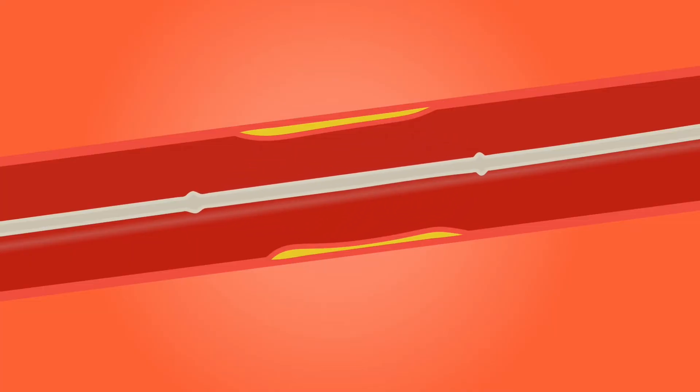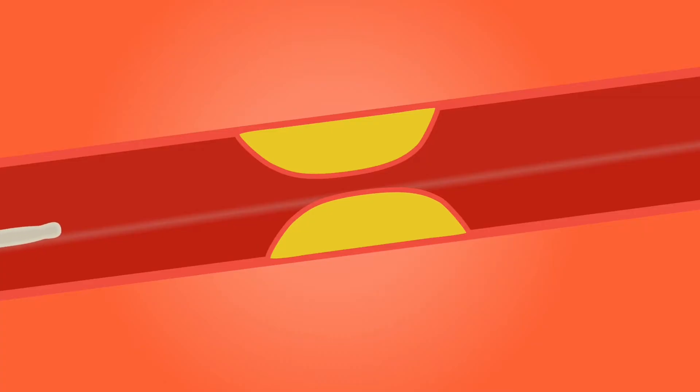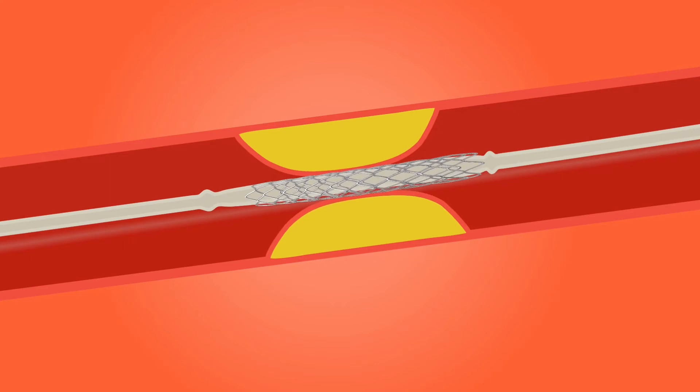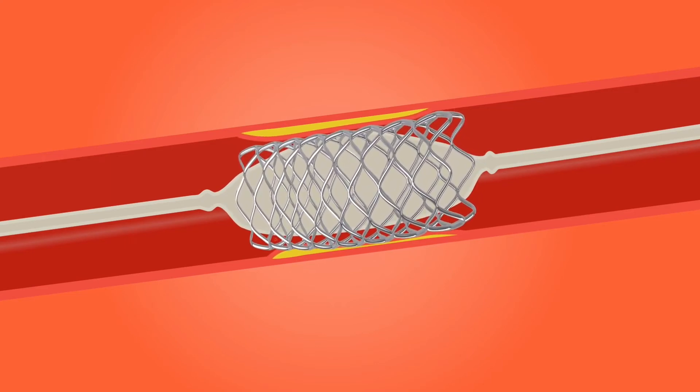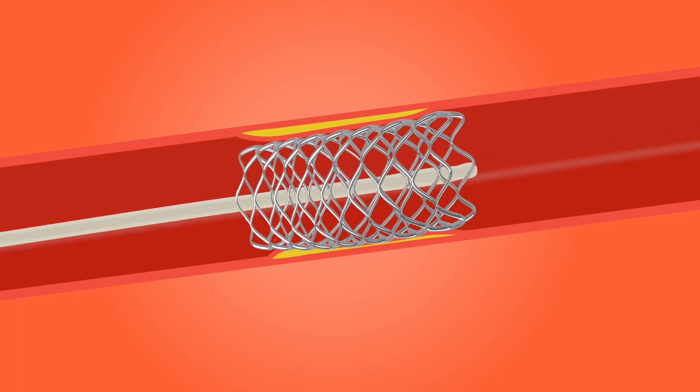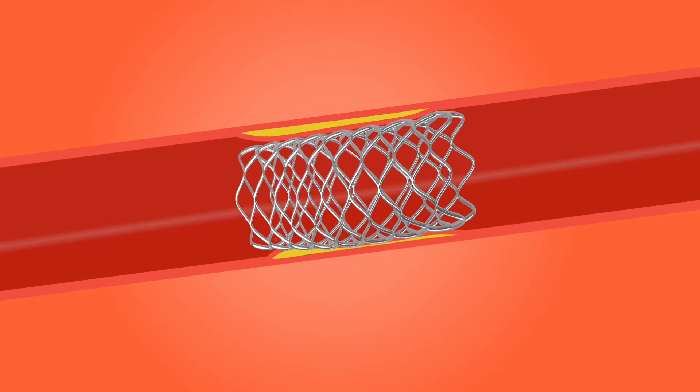Once the pathway is clear, the doctor removes the balloon from the body. Then a second balloon — this time carrying a stent over it — is sent to the blocked area. When this balloon is inflated, the stent also expands and presses against the artery walls, fixing itself in place. The doctor then removes the balloon, wire, and catheter from the body. With the stent in place, blood can now flow easily through that part of the vein or artery.